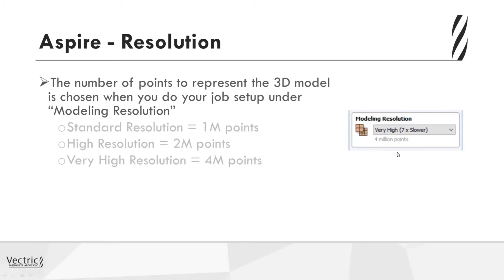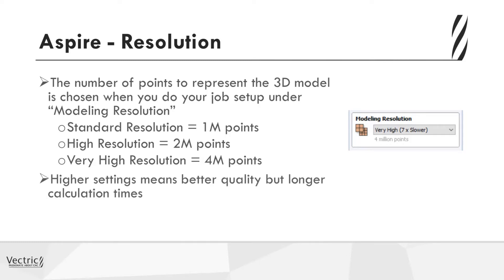By default, we're presented with three options for this. First is your standard resolution, where we apply 1 million pixels over the surface of your entire work area. Then we have high resolution, which is 2 million pixels, and we have very high resolution, which is 4 million pixels over the surface of your entire work area. The higher settings mean that we'll get a better quality model; however, it may mean longer calculation times for some modeling and tool pathing operations. So you have to balance it out appropriate for the type of work and the computer hardware that you are running.